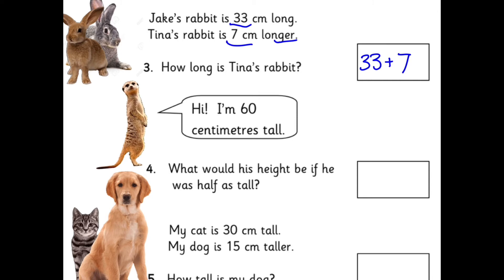The meerkat is 60 centimetres tall. What would his height be if he was half as tall? So that's a dividing question: 60 divided by 2. What is half of 60? If you know what half of 6 is, that will help you.